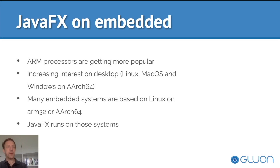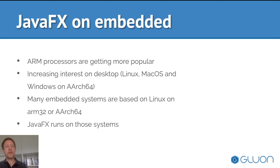Now let's move to Embedded. ARM processors are increasingly getting more popular — both ARM32 as well as ARM64 processors. But also on desktop we see increased interest in ARM; Linux, macOS, and Windows already run on ARM64 CPUs as well. On embedded, ARM64 is popular but ARM32 is popular as well. And the good thing is that JavaFX runs on those systems — the same JavaFX that runs on a Windows system also runs on embedded systems with ARM32 or ARM64 processors.